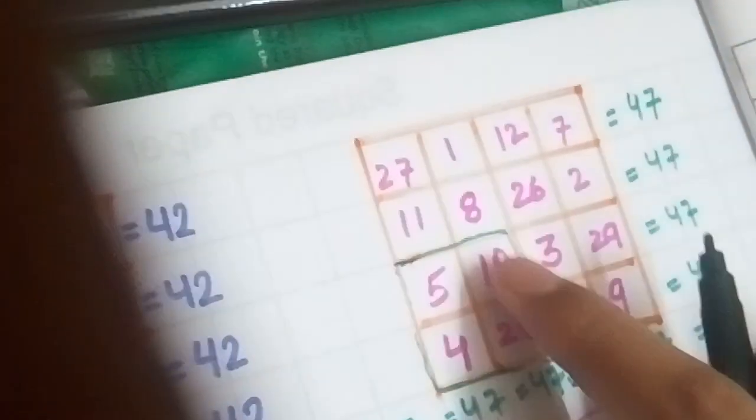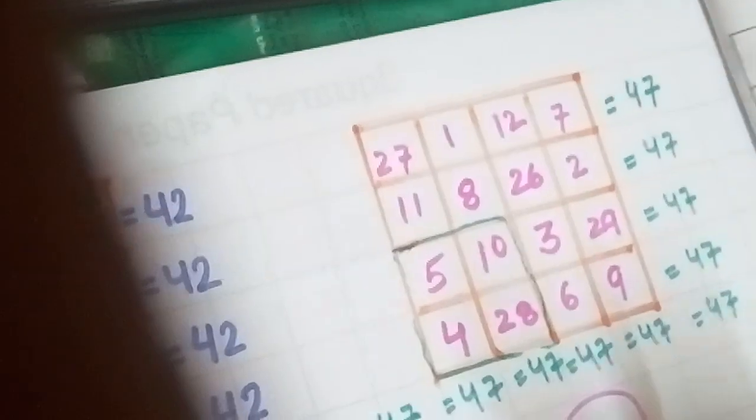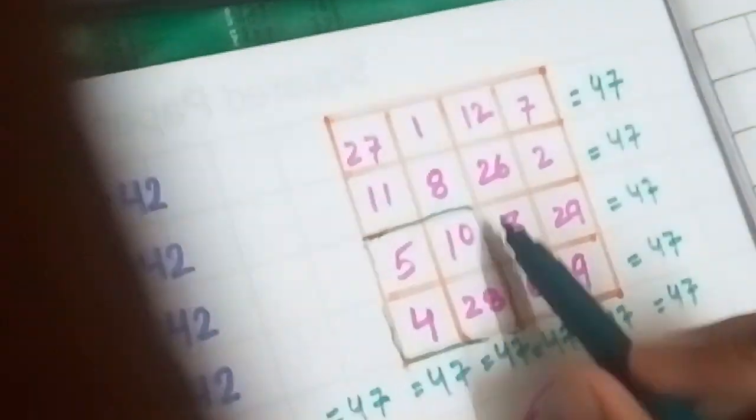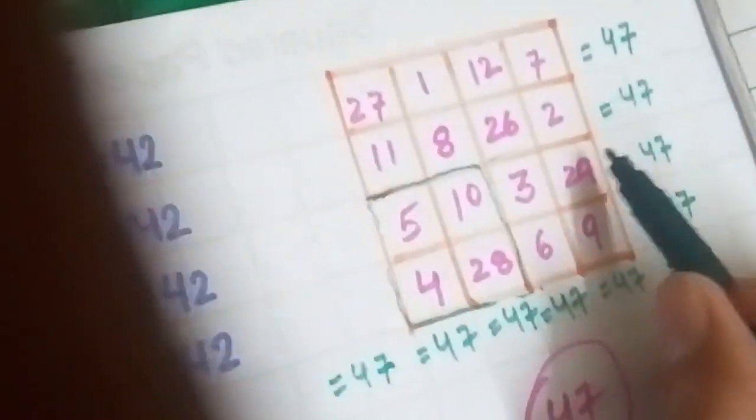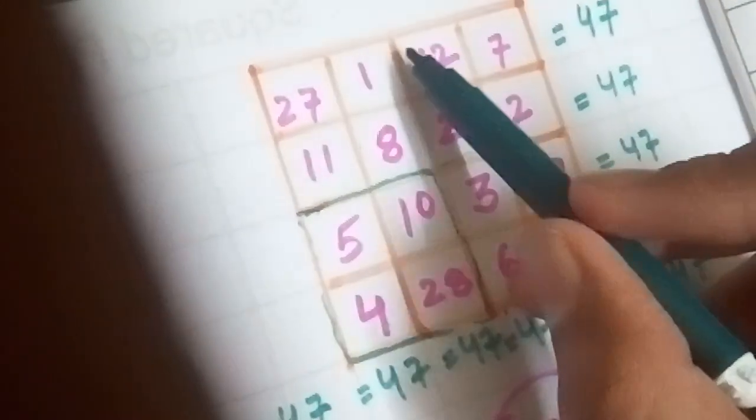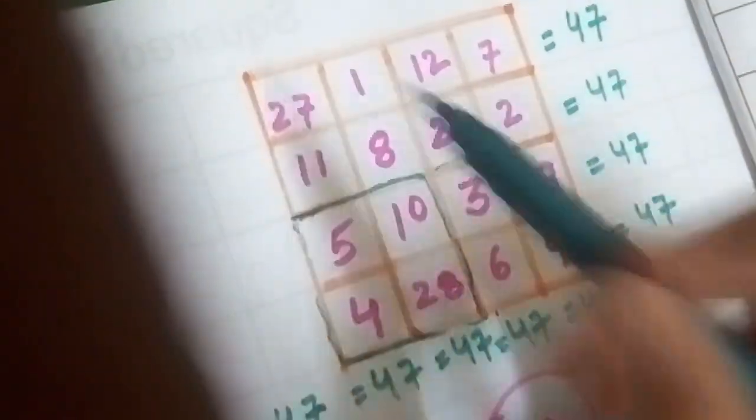You would see that the sum of the square is also 47. In the same way, this square also has numbers who add up to 47, in this square also, this square also, and this square also.